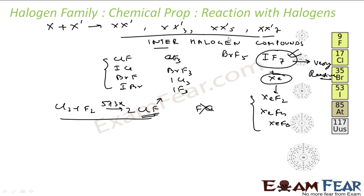For XX5, examples include BrF5, IF5, and CLF5. For XX7, the only example is IF7.